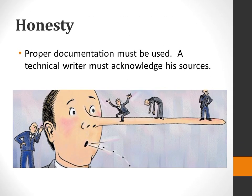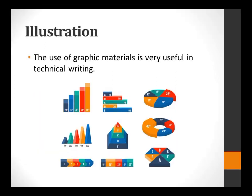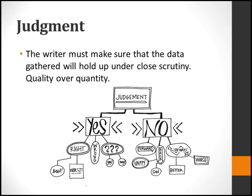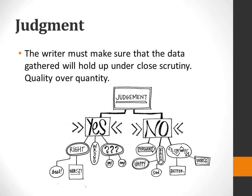H for Honesty: Proper documentation must be used — a technical writer must acknowledge his sources. I for Illustration: The use of graphic materials is very useful in technical writing.